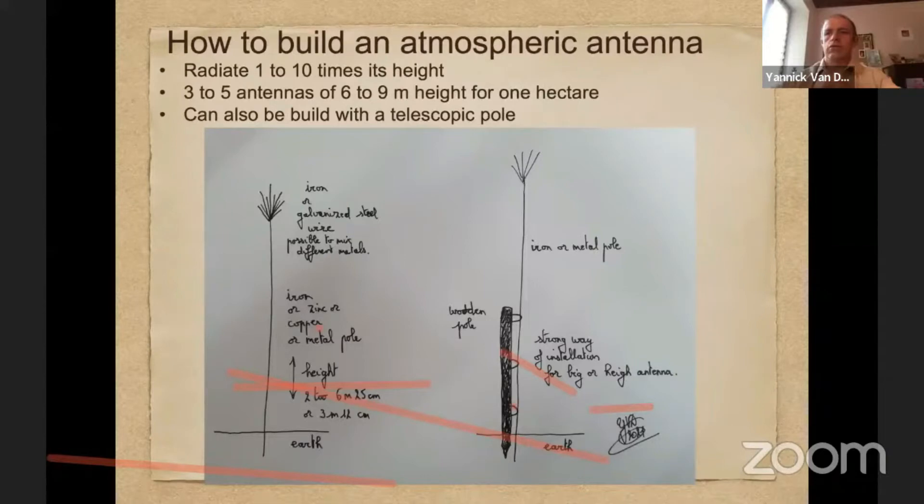You can also use a wooden pole and put a wire along the pole from the atmosphere to the soil, to the earth, and you will see all plants will grow a lot better.